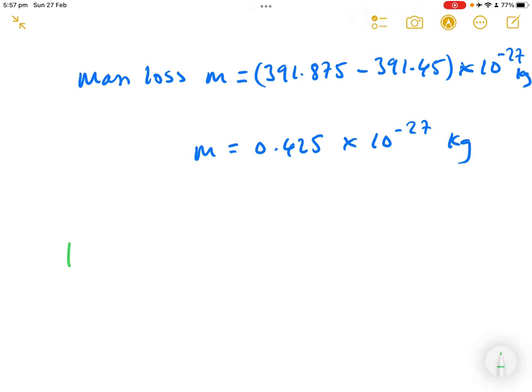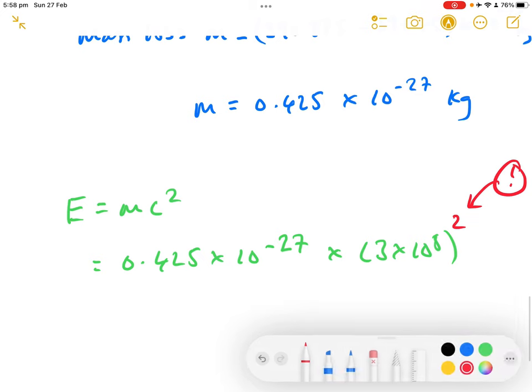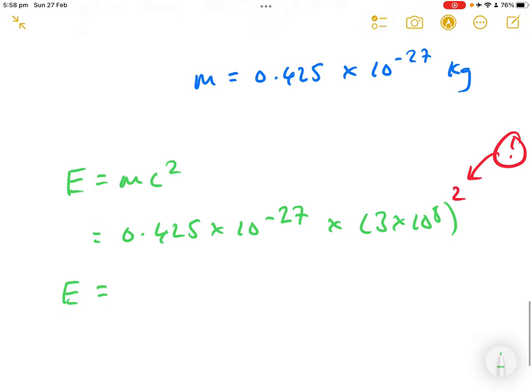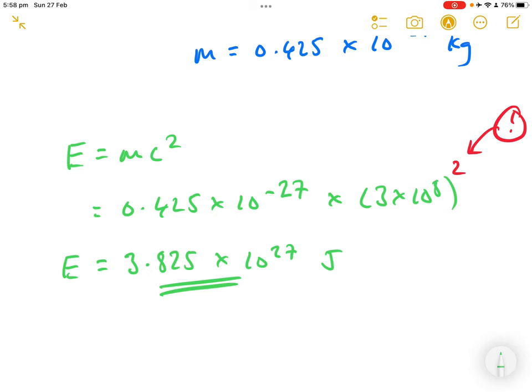Once you've got the mass lost you can then apply E is mc squared in order to get the energy released. So that's 0.425 times 10 to the minus 27, times 3 times 10 to the 8, all squared. Do not forget to square the C, a very common mistake. When you type all that into your calculator, you'll get 3.825 times 10 to the minus 27 joules. That's for one fission. Doesn't seem like a lot, but there are many, many fissions going on per second. That's how you work out the energy released in a fission reaction.